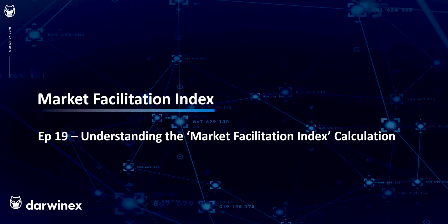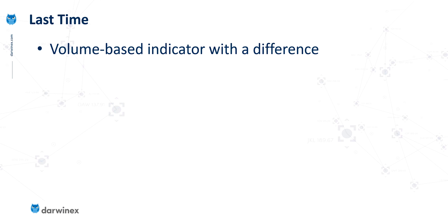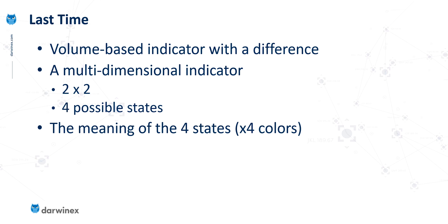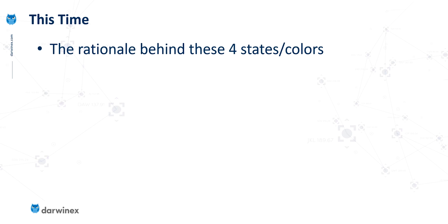Let's now take a detailed look into the workings of this rather unique indicator. It is a volume-based indicator, like many of the others we've looked at, but with a significant difference — both in terms of how the calculation is performed, but mostly in terms of how the intelligence is delivered to the trader. I consider this to be a multi-dimensional indicator that looks at two different factors behind the market, each of them having two states, meaning that in total we have four possible combinations, and each of these states is given a colour which signifies what's taking place in the market at that time.